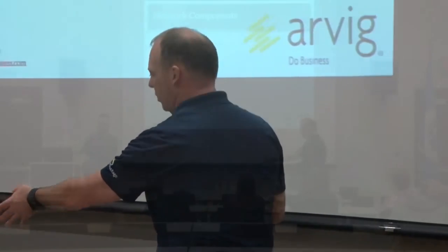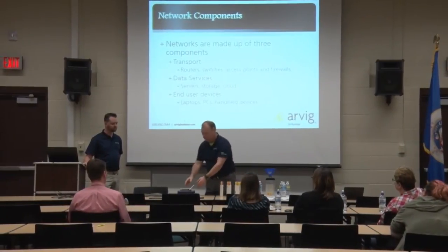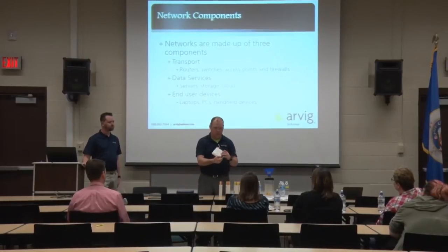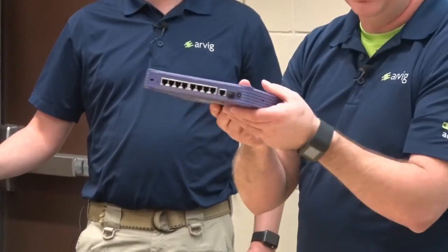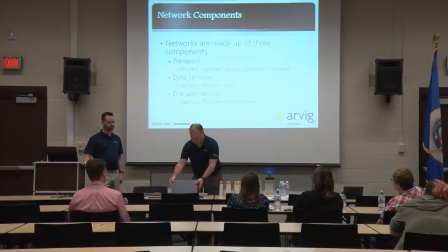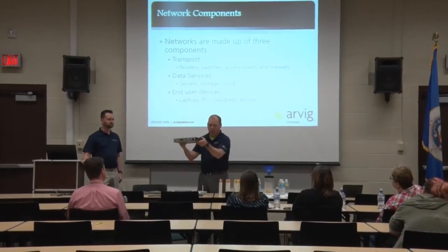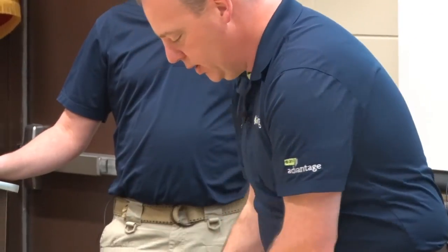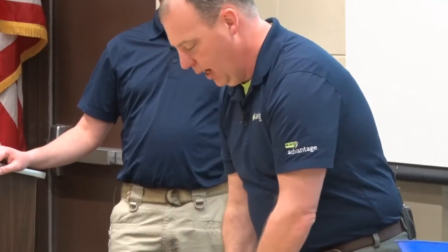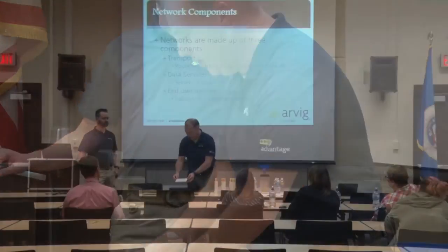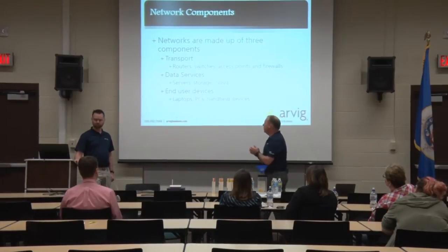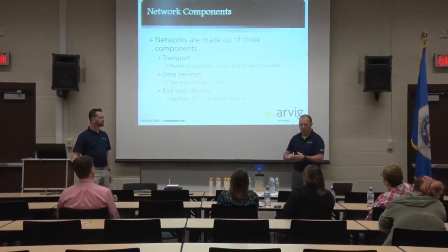As we think about transport, we're talking about items Justin has out — a wireless modem, which the little antenna tells us is wireless. We have switches, where we plug multiple devices in. And we have a router, which looks like a big square box — this moves data from one network to another. As far as data services, it's kind of hard to show you a server because they're big and heavy.